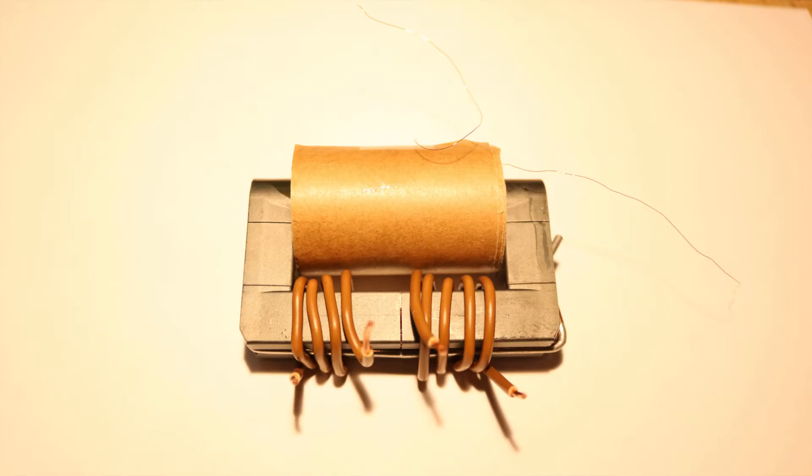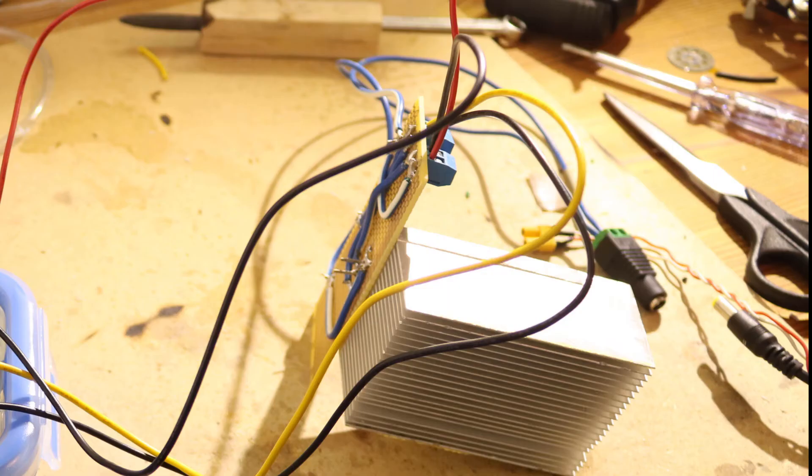Then I put the secondary coil on the transformer core and on the other side I have a feedback coil with four windings and a primary coil with five windings. I will later use a flyback driver for the transformer and it's very easy to find it on the internet.